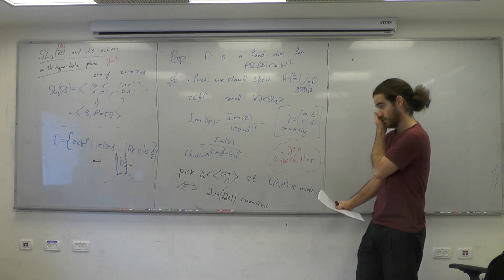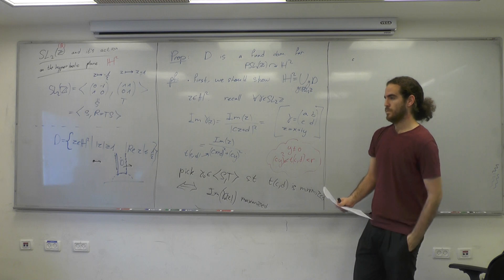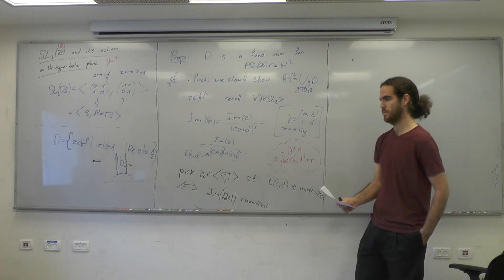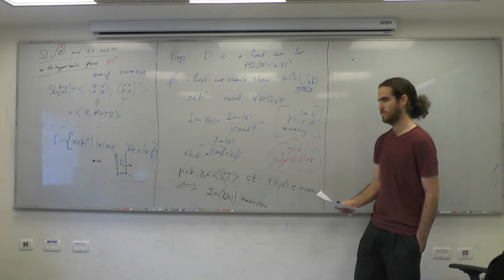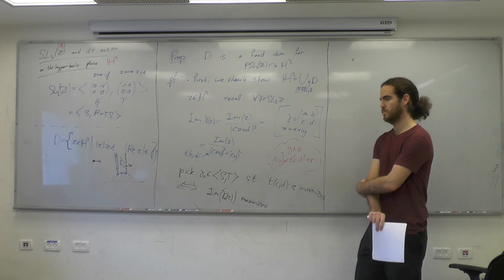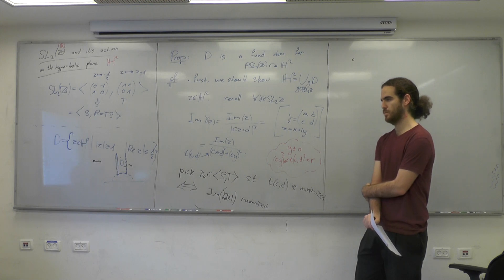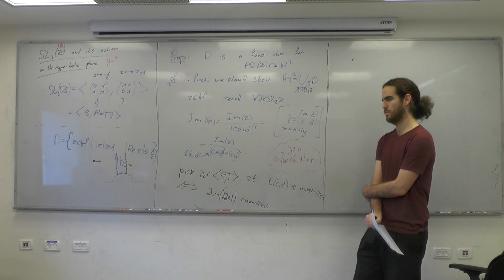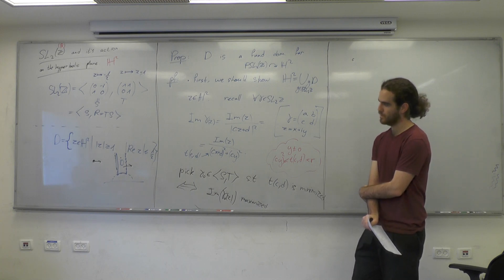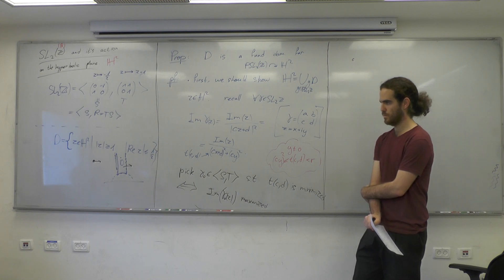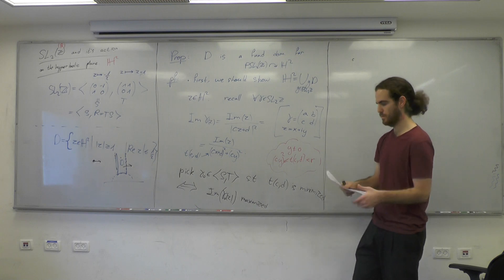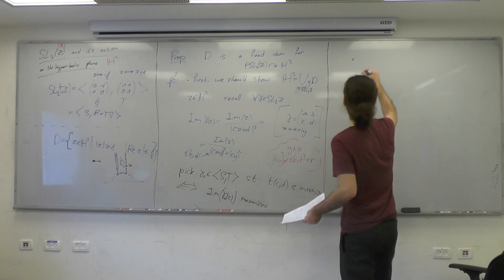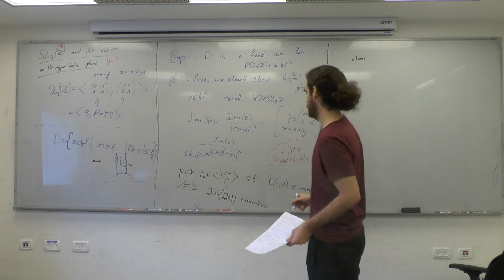If you think of it: the SL2Z orbit of the ideal point at infinity will be either infinity itself or a rational point, so it stays away from any given Z inside the upper half plane. By compactness, once a point has positive imaginary part, its orbit will stay boundedly away from infinity.